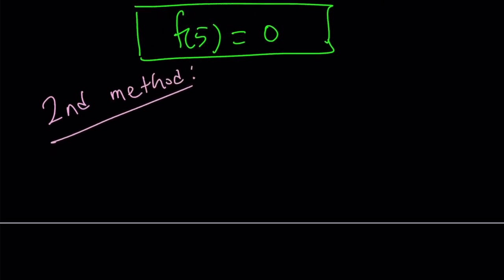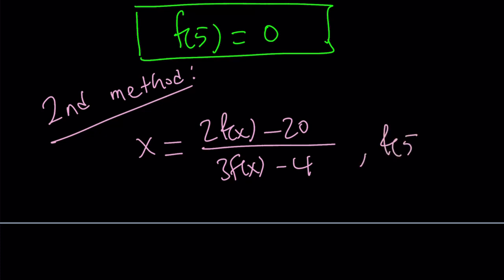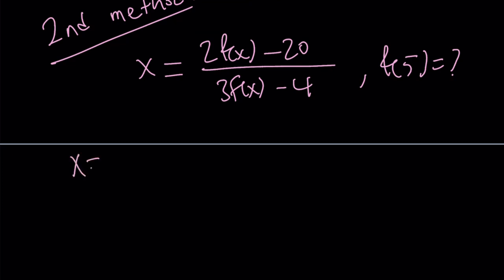So for our second method, let me rewrite the original problem: x equals 2 f of x minus 20 divided by 3 times f of x minus 4. Remember, our goal is to find f of 5. So instead of trying to solve for f of x, which is less straightforward, why don't we just replace x with 5 everywhere? Because we're trying to find f of 5, so it would make sense. So set x equal to 5 everywhere.